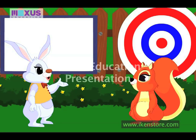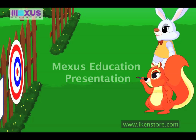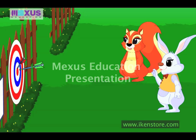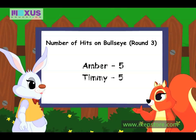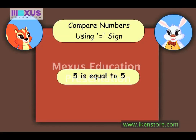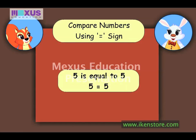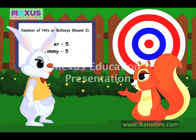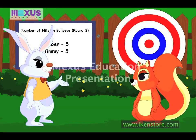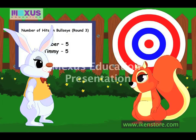Now, this is the last round. This will decide who wins the game. Hey, we both hit the bull's eye five times. Oh, yes. That means we have equal scores now. We use this symbol to show is equal to. So, we put the equal to symbol between five and five to show that we have scored equal points. So, who wins the game? Well, I guess the game is a draw. Oh, never mind. We will play some other time.